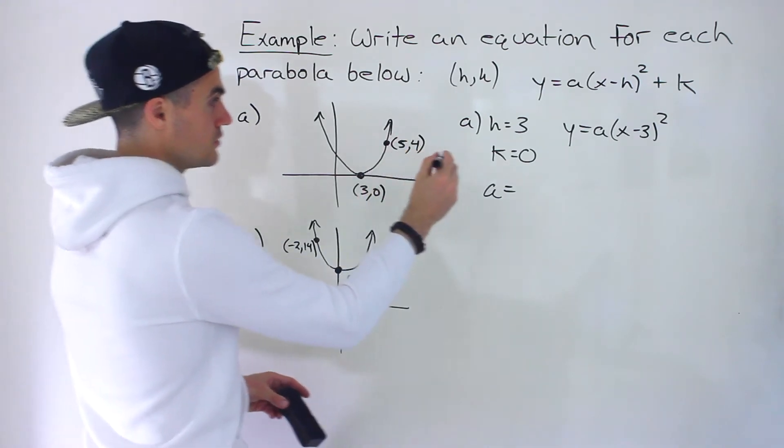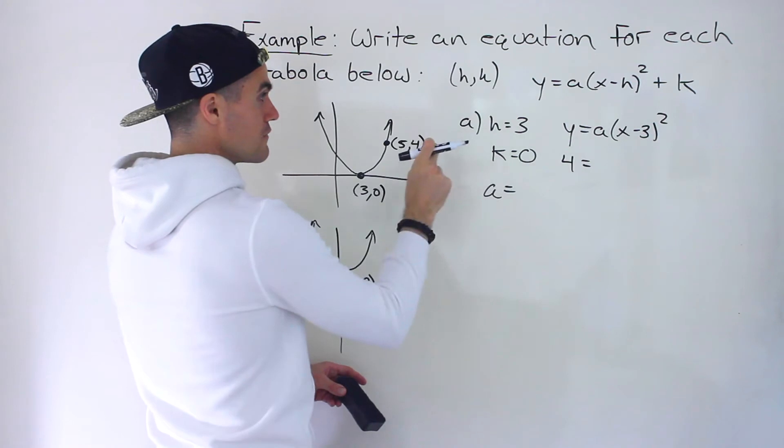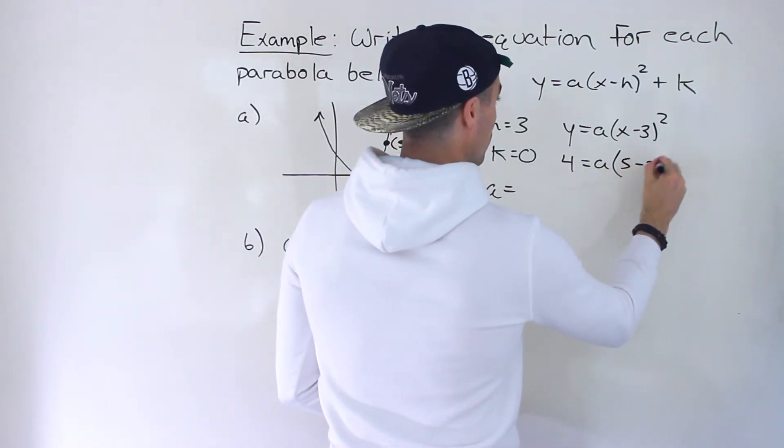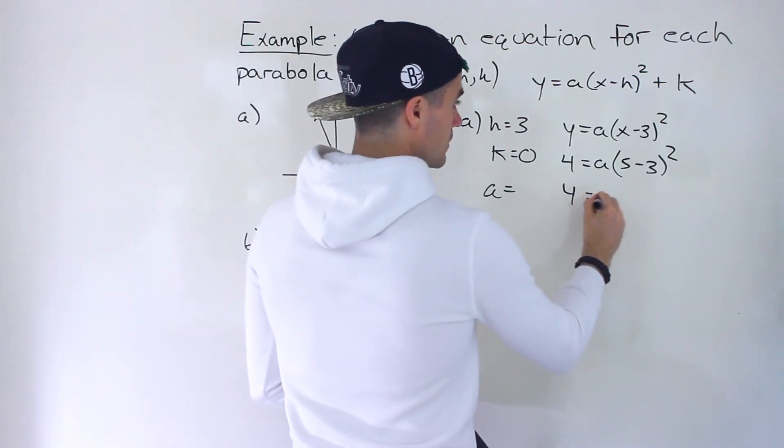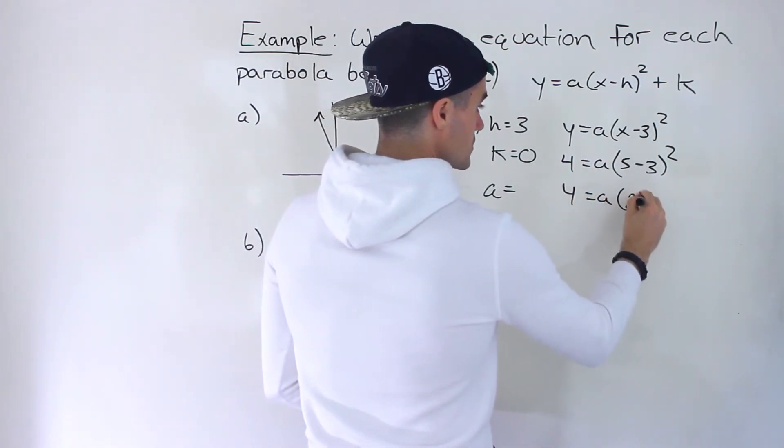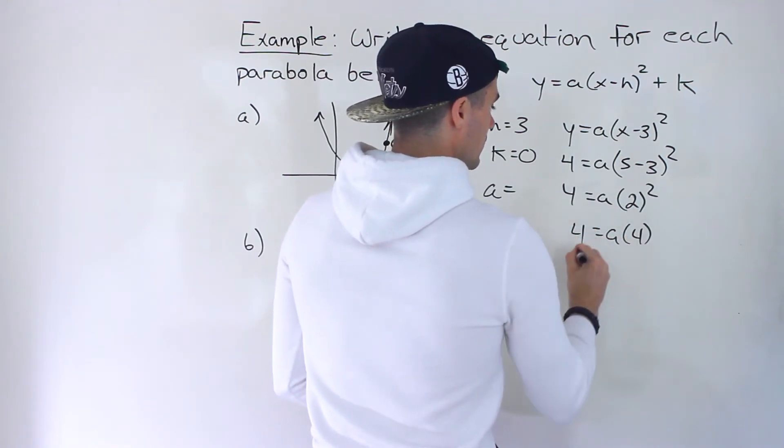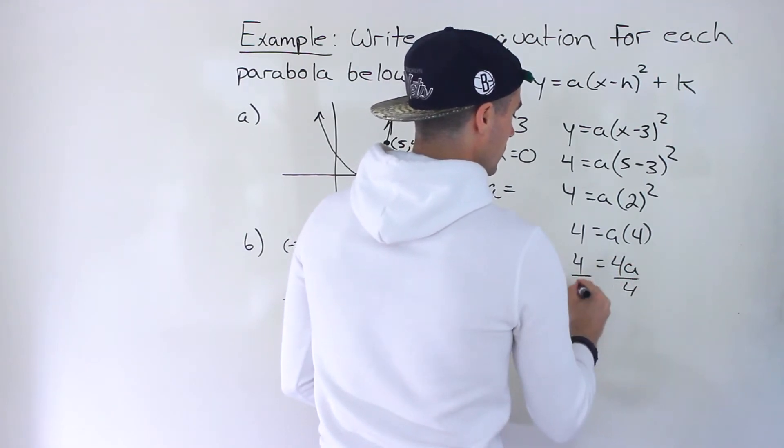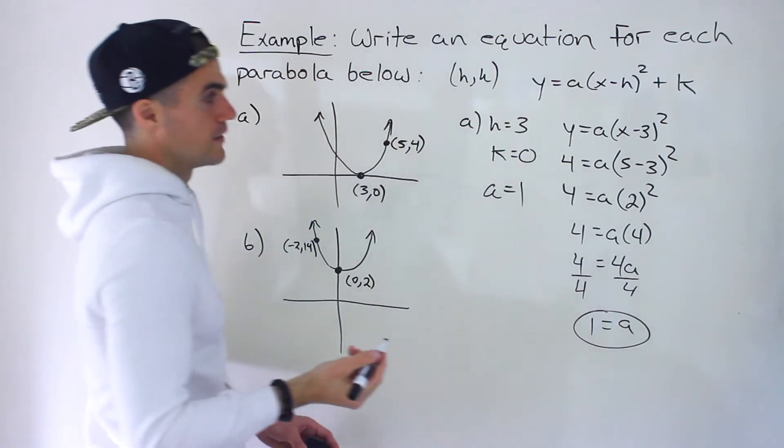So you do have to use the other point to solve for the A value. But it's fairly simple. All you do, you put a 4 for the Y value, the A value we're solving for, and then you put the 5 for the X value. And so from here, work with the bracket first. Then you work with the exponent. So you end up with 4 equaling 4A divided by 4. So in this case, A is just equal to 1.